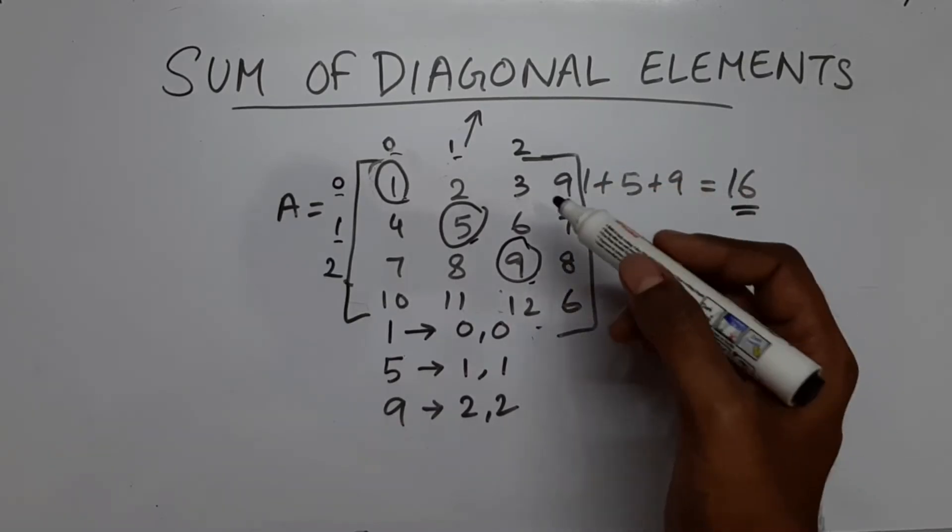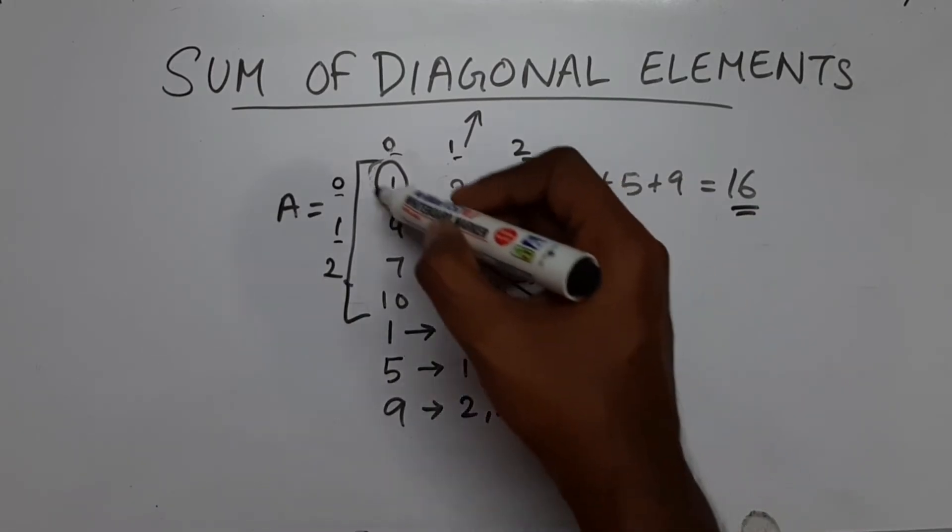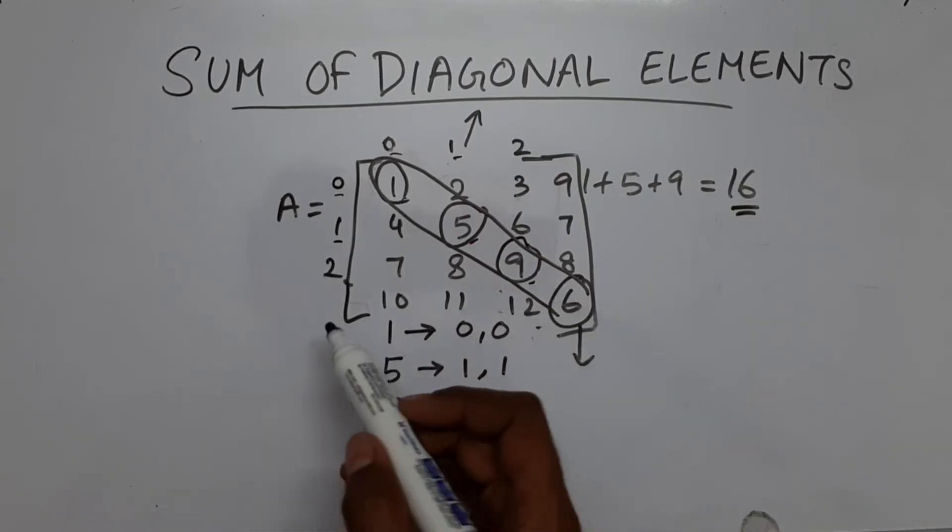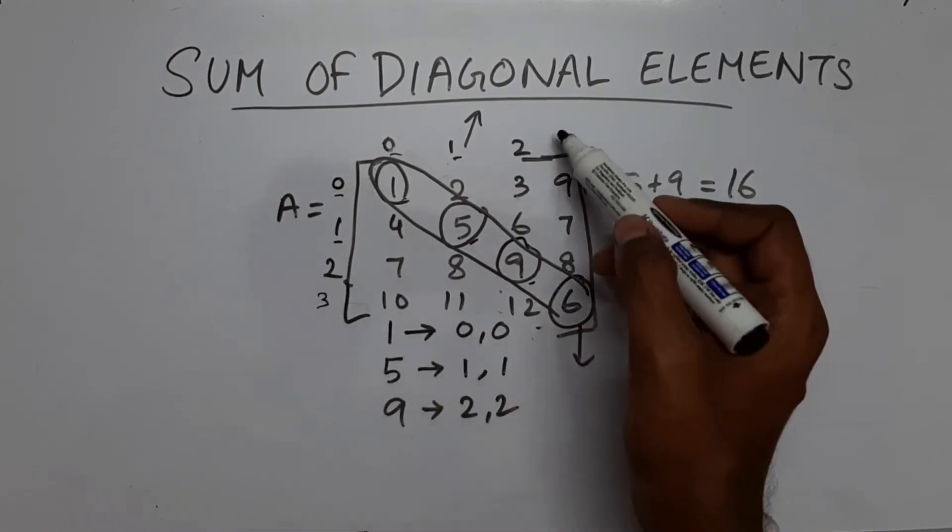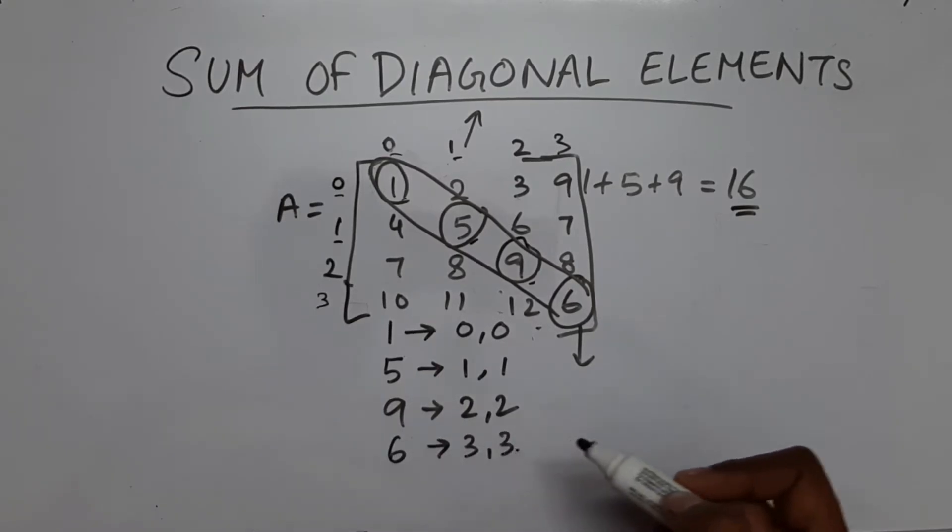So this is the 4 x 4 array. And if we see for this element, this is also now included in this diagonal. So what about this 6? What is the row and column for this? So again for 6 we can see that the row is 3 and the column is also 3.